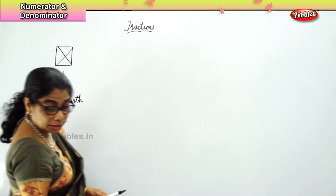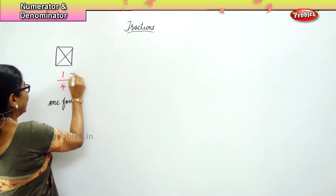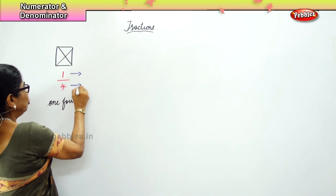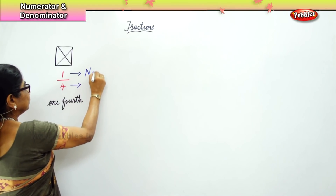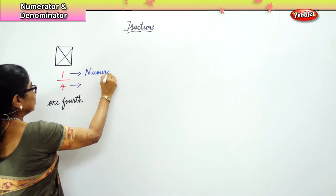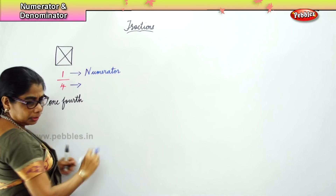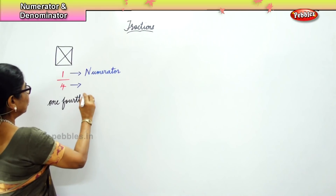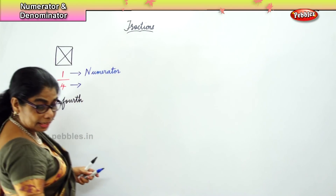What do we call the top number? We call it numerator. And the bottom one, we call it denominator.